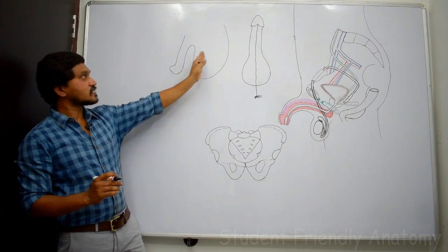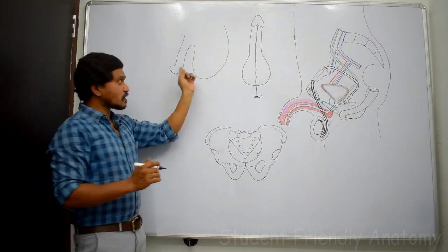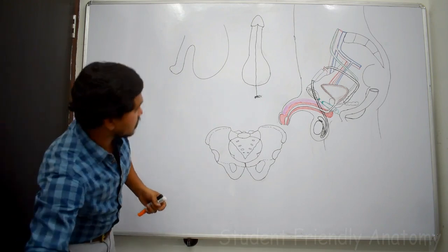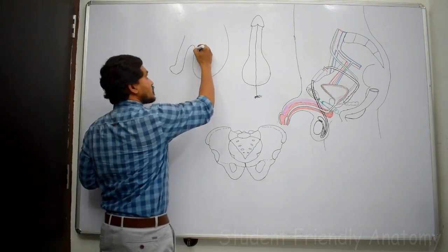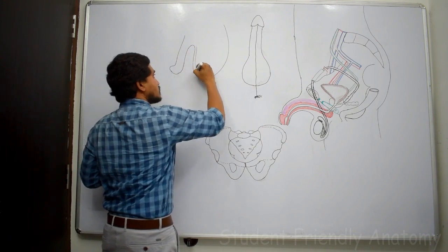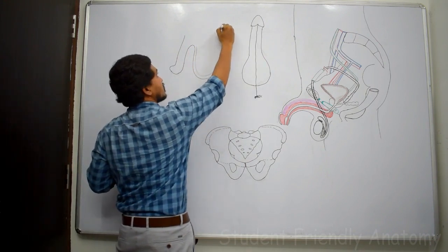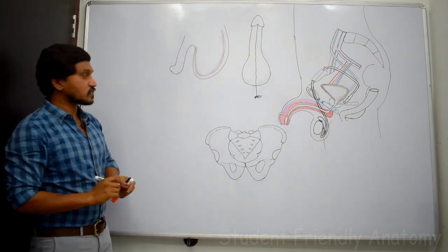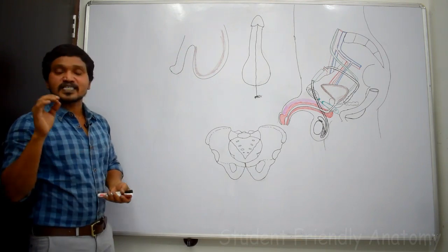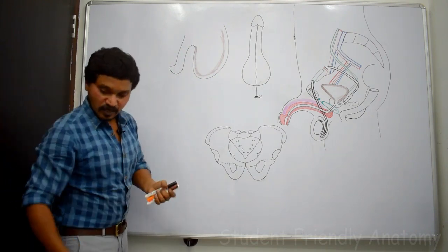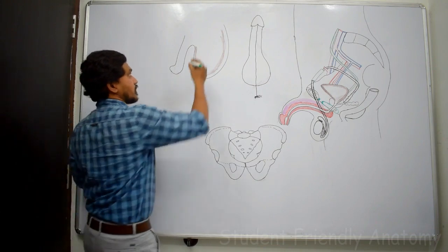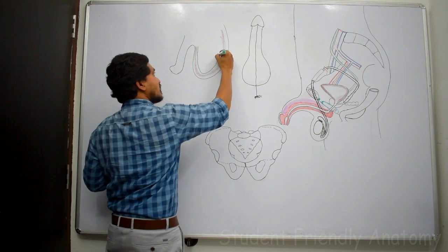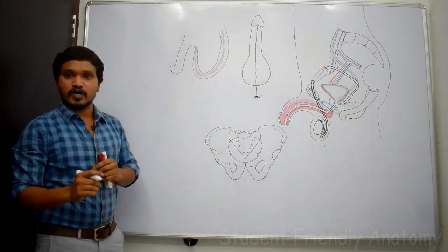What are the layers present in the scrotal sac from outside to inside? First is skin. After skin, you can find one subcutaneous muscle — the dartos muscle. After dartos muscle, you can find the external spermatic fascia, which is derived from the external oblique abdominis muscle.